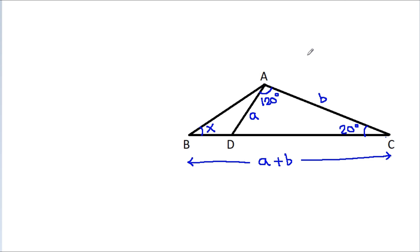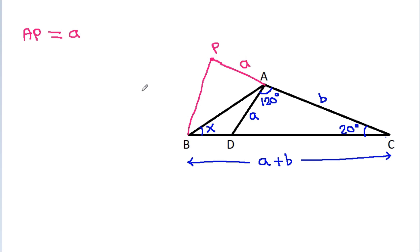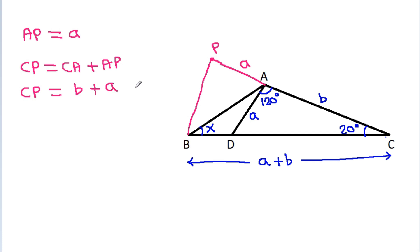So here, if we extend CA to a point P such that AP is equal to A, then CP will be equal to CA minus AP. So CP will be equal to B minus A.